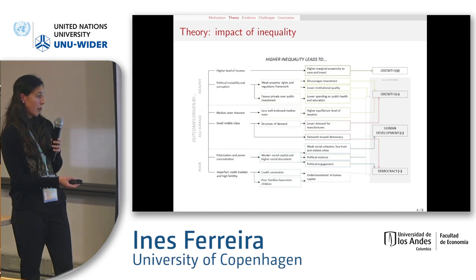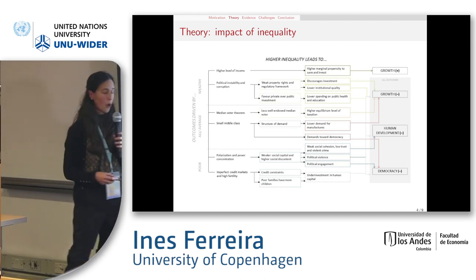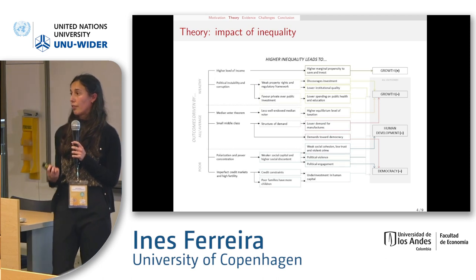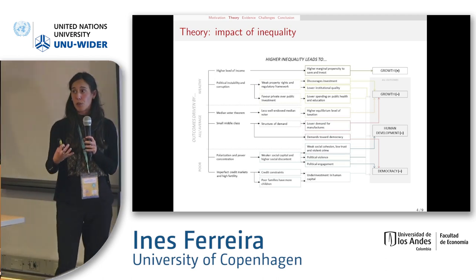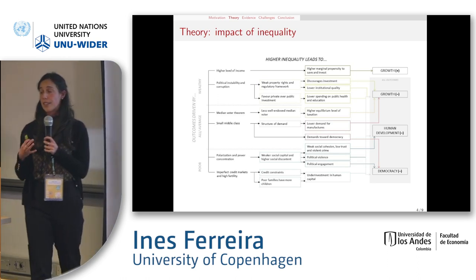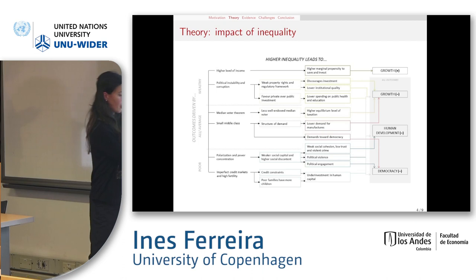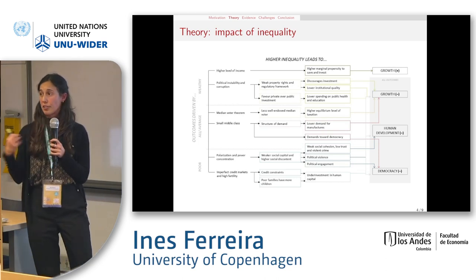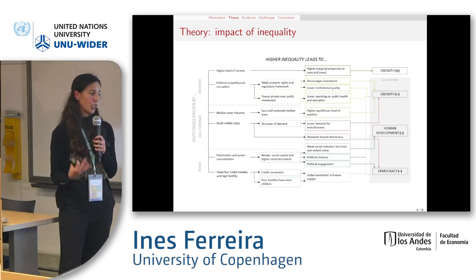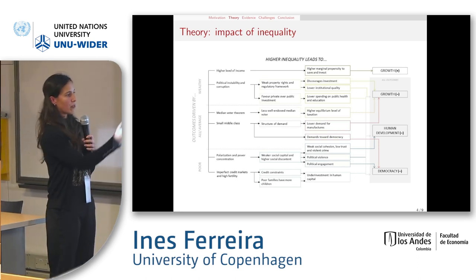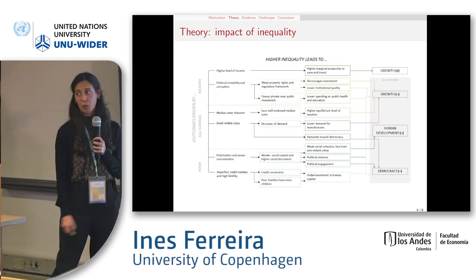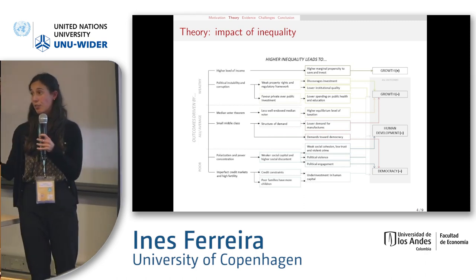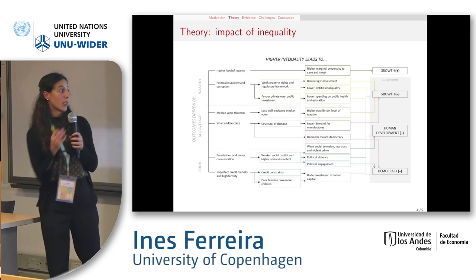Finally, some studies focus on what happens when there are constraints in terms of access to credit and how that can lead to underinvestment in human capital. Poor families may tend to prefer larger families, focusing on high fertility. Both these mechanisms highlight how the situation of the poor in a context of high inequality can lead to underinvestment in human capital, which has an effect on human development but also on growth. Hopefully you can see that several of these channels highlight negative effects across all three outcomes.